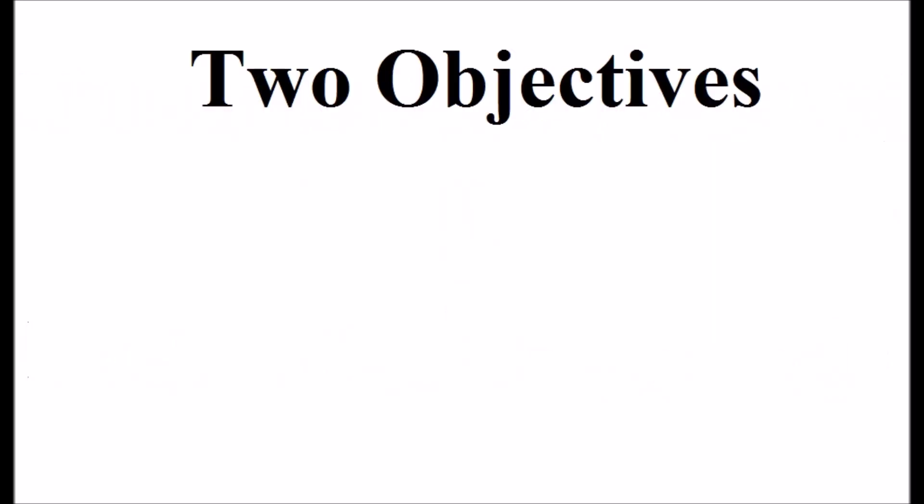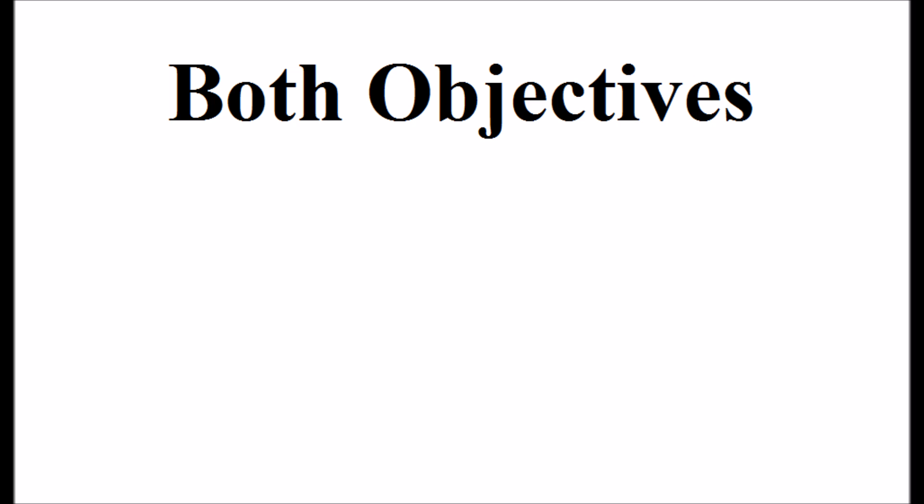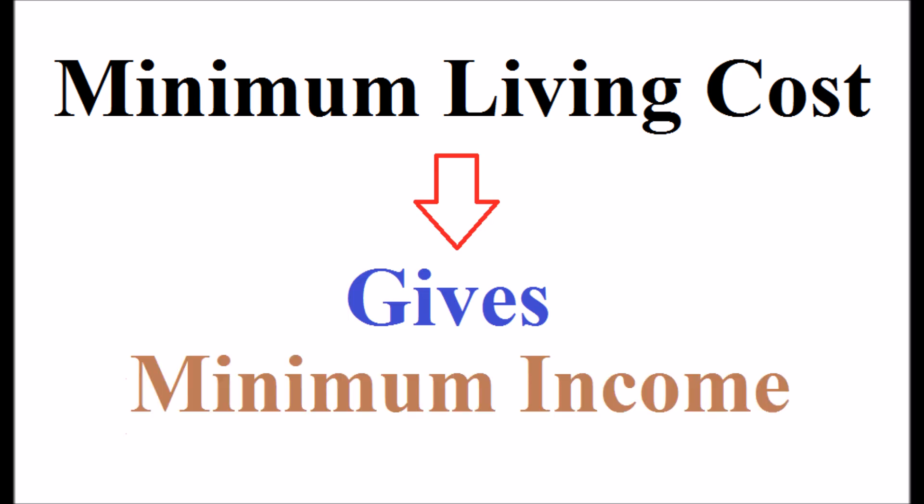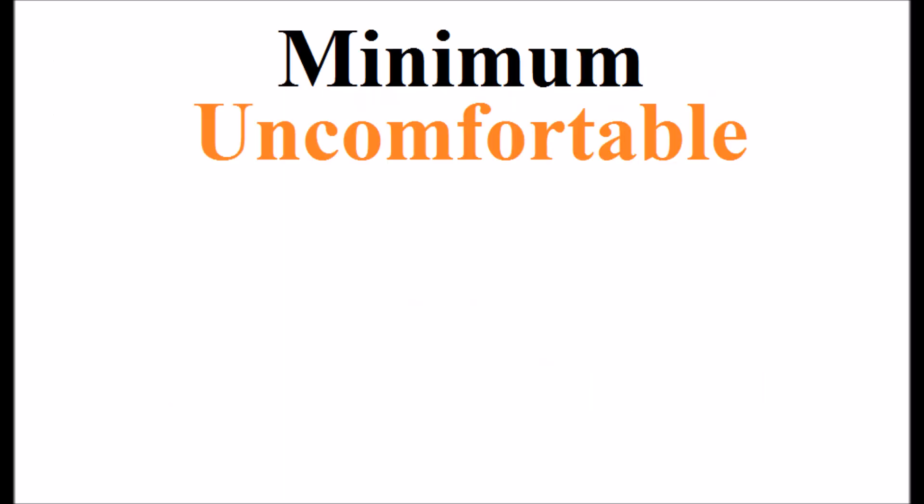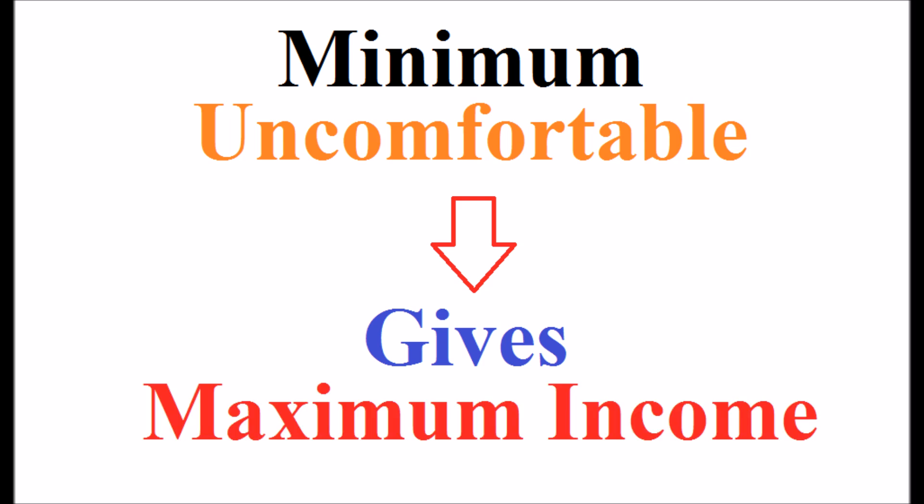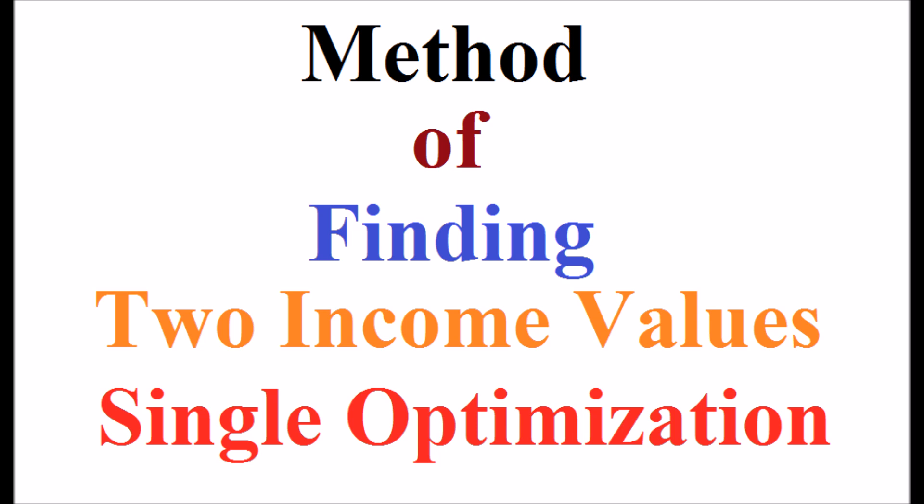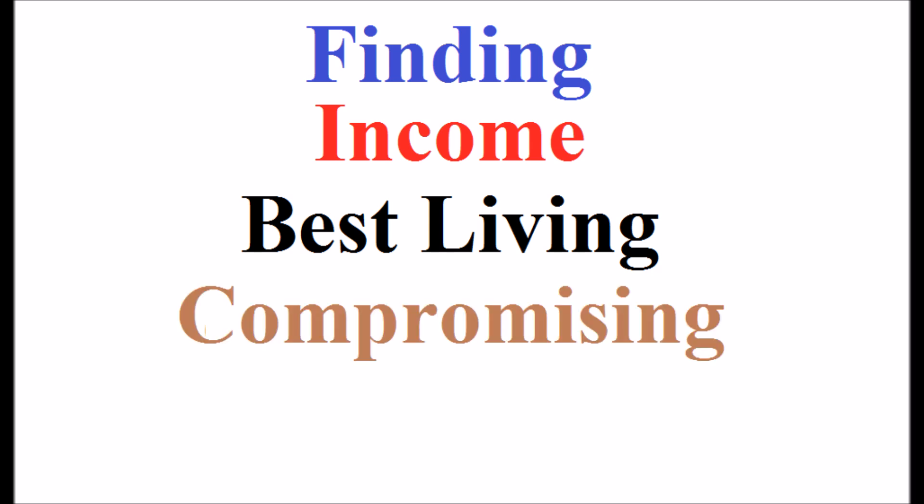Two objectives are conflict in nature. Both the objectives are depending on the income. Minimum living cost gives the minimum income. Minimum uncomfortable gives the maximum income. The method of finding the two income values is called single optimization. Finding the income for best living by compromising the two objectives is needed.